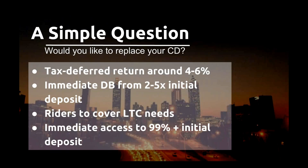To wrap up, think about this from a vision and value standpoint. If you went to all your clients aged 50 to 75 who have more than $100,000 in CDs or money market accounts and told them you could give them a tax-deferred rate of return of 3–6%, an immediate death benefit that makes that pile of money worth two, three, four, or even five times what it's worth today, options for long-term care benefits, and immediate access to all their money — what do you think their response would be? That simple question — 'Would you like to replace your CD?' — is really the key. Make a list of your clients in that category and call them.